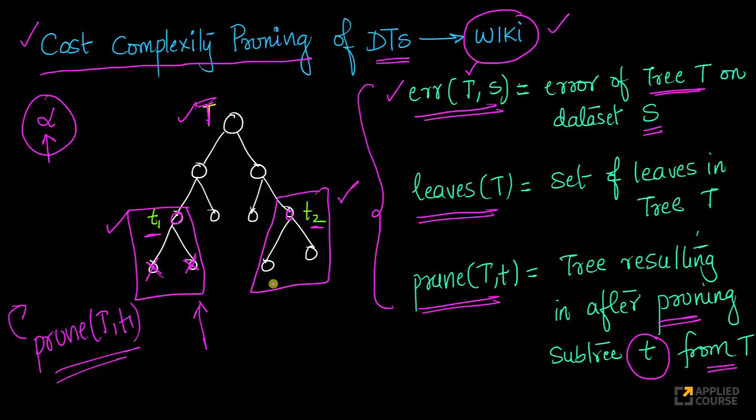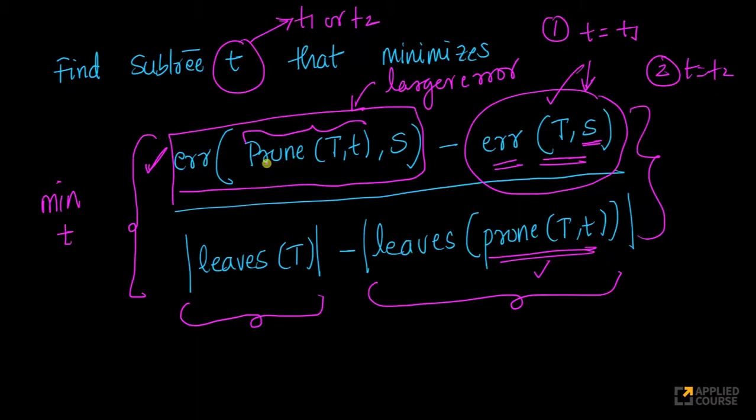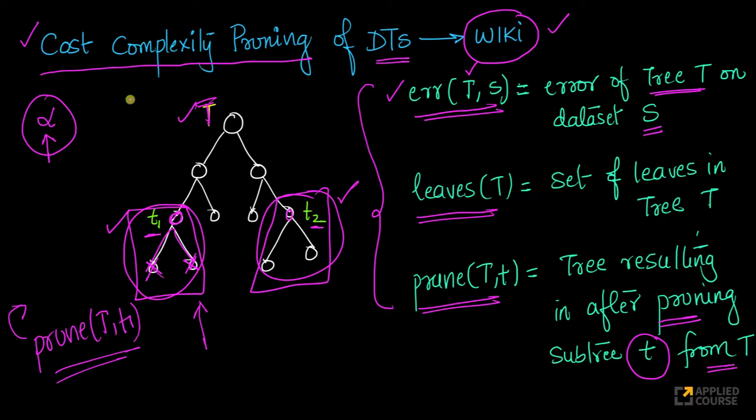So, this is how, this is one example. At any point, if you have subtrees like this, oftentimes cost complexity pruning happens bottom up, and you can have all these subtrees, and you can see which subtree results in the minimum value of that, that subtree you prune as you keep increasing your alpha.